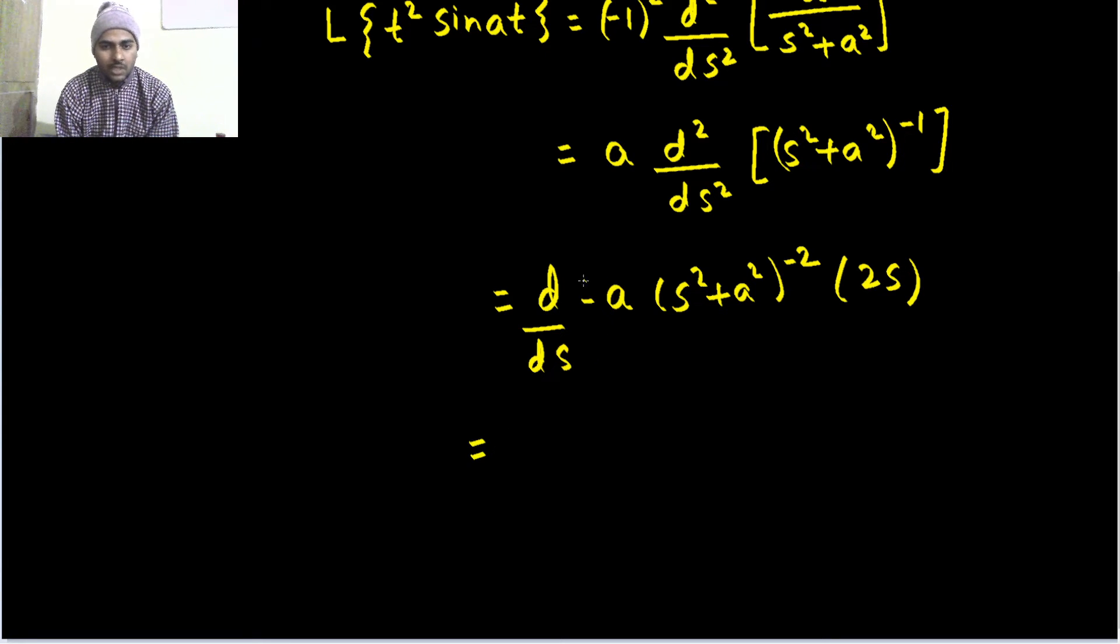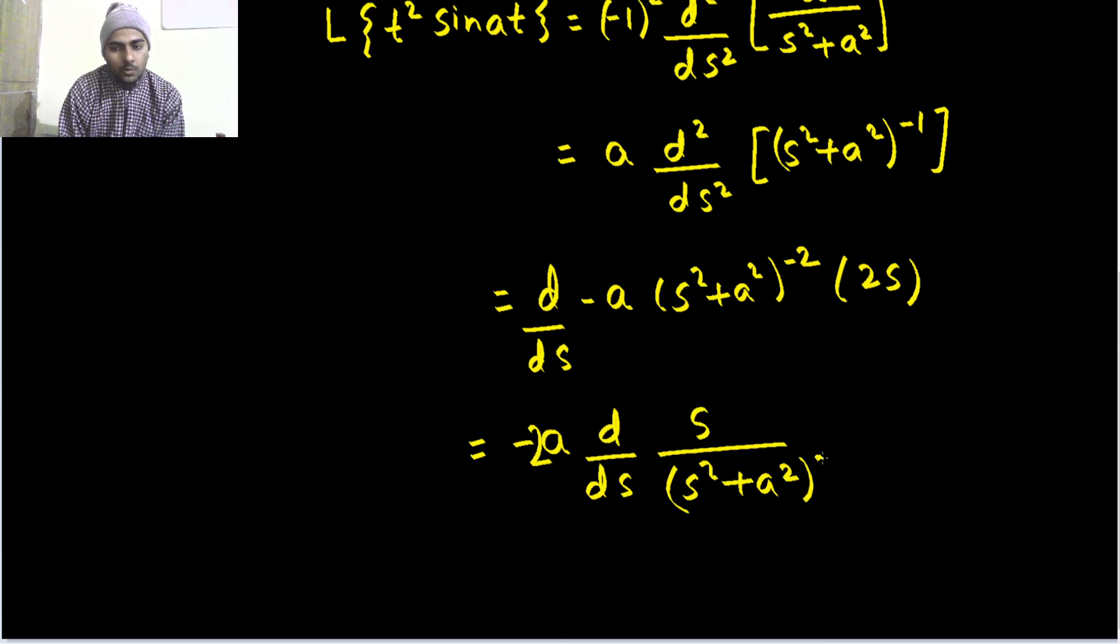So, again, the constant thing which is minus a can come out. Next, we have to find d by ds of s square plus a square power minus 2, that can now be written. I can also take 2 out. So, this 2s can come out and I am left with s divided by s square plus a square whole square.